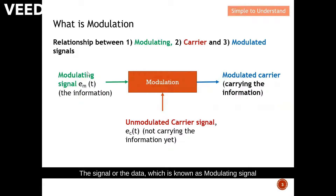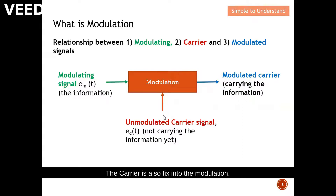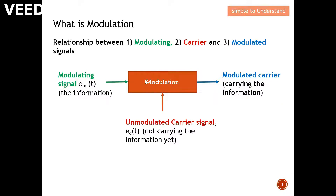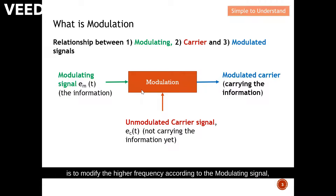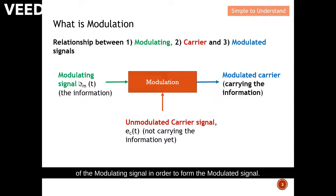Right in the middle is the process of modulation. The data, known as the modulating signal, is fed into the process of modulation. The carrier is also fed into the modulation process. As explained, the process of modulation modifies the higher frequency carrier signal according to the modulating signal — meaning we change the carrier signal with some characteristics of the modulating signal — in order to form the modulated signal, which is the signal we send over the air.